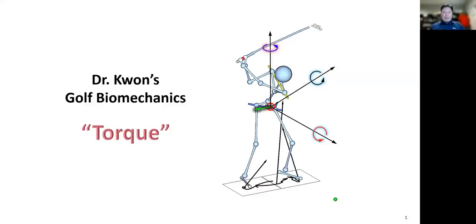Hi everyone. In this episode, let's talk about the concept of torque. Torque is one of the most important concepts in the golf swing, so it is worth paying attention to. In the golf swing, we have to deal with several torques. In order to generate faster rotation motion, you have to generate larger torque by using the ground. So let's first define what torque is, and then we'll highlight the concept of torque in the context of the golf swing.